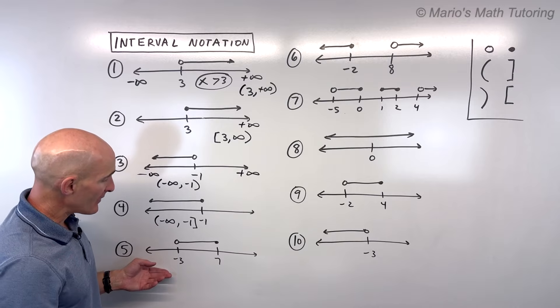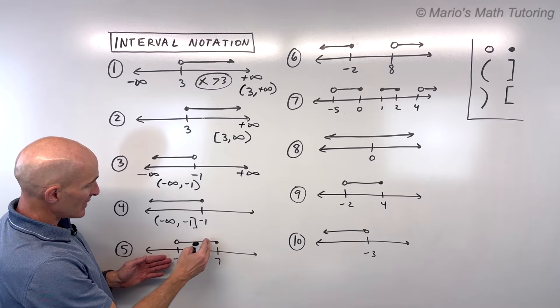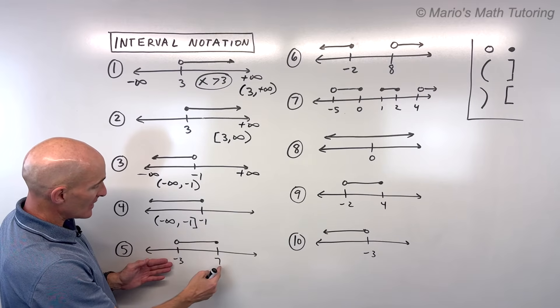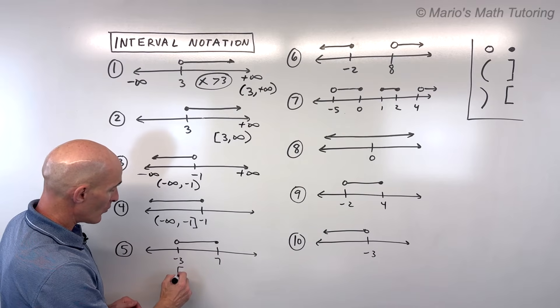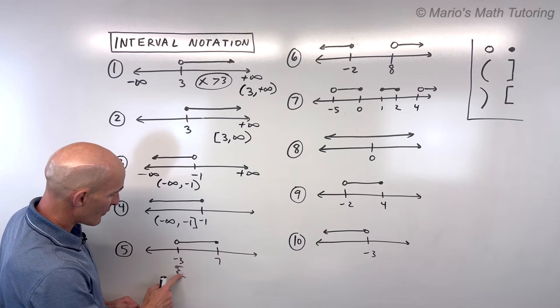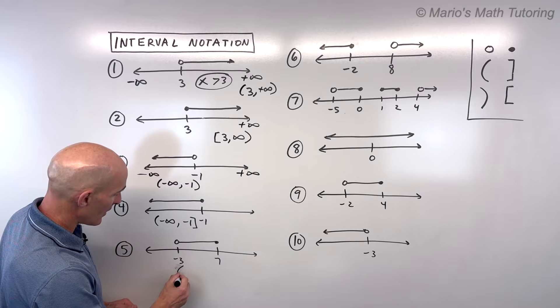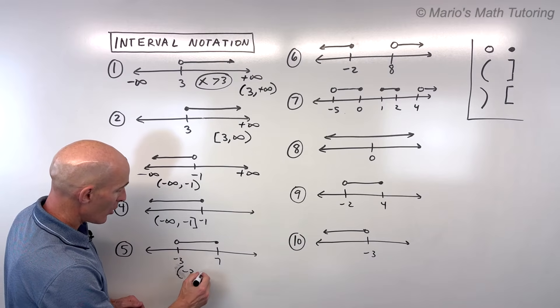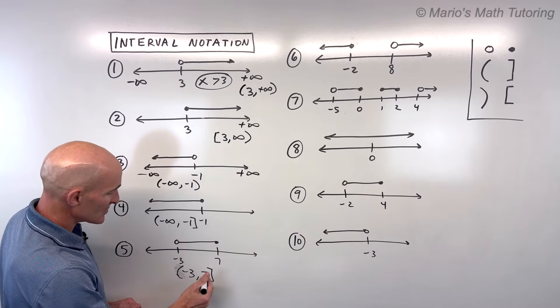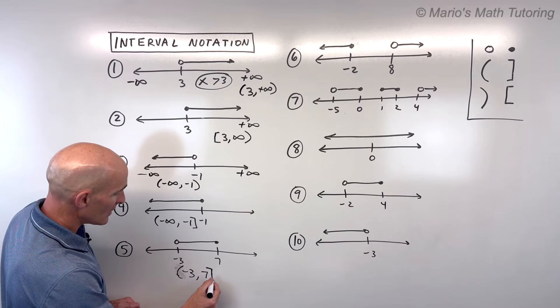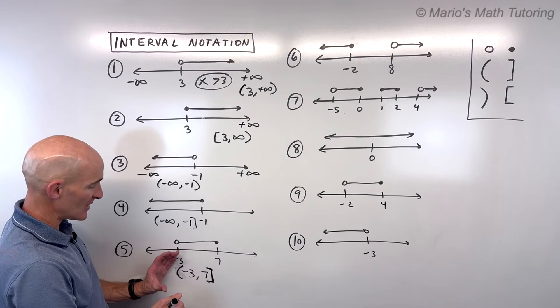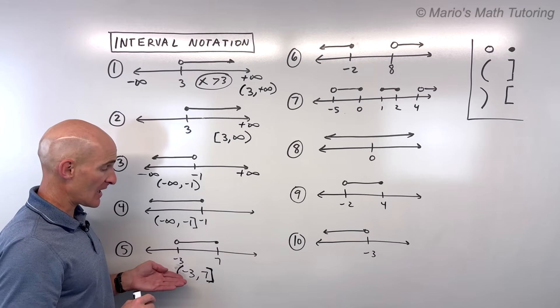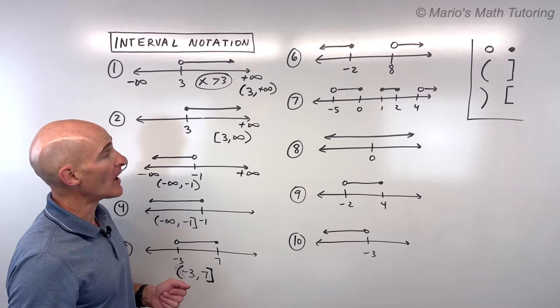For number 5, we're just looking at the values between negative 3 and 7. It includes 7, but it doesn't include negative 3. So again, working from left to right, we want to, not bracket, it doesn't include negative 3. So parenthesis negative 3 all the way to 7. It includes 7, we use that bracket. Make sure you make it real clear to your teacher that it's a square bracket. This is real clear. This is a parenthesis, meaning it doesn't include negative 3. Again, left to right, low to high.